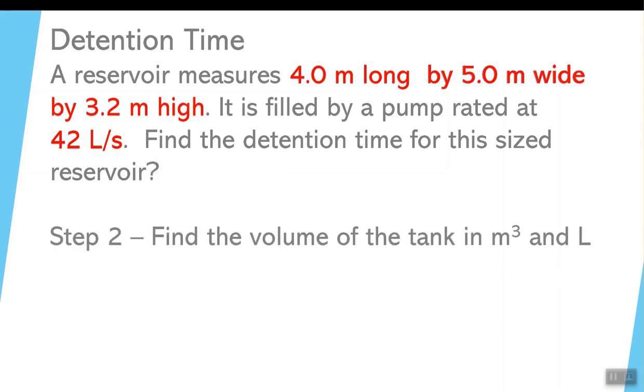Step two. We have to find the volume of the tank in cubic meters and liters. Why do we have to find it in liters? Because our flow rate is in liters per second. We have to have those common units later on. Formula for this particular tank, you can see it's a length, width, and height, so it's got to be a rectangle.